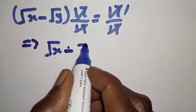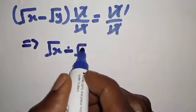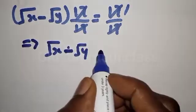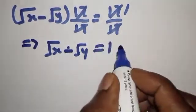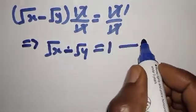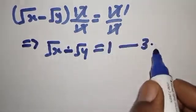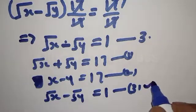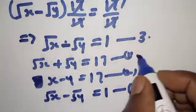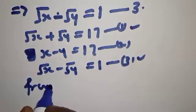This gives us square root of Y — and therefore square root of X minus square root of Y equals 1. Let's call this equation 3. Now let's work with equations 1 and 3 together.